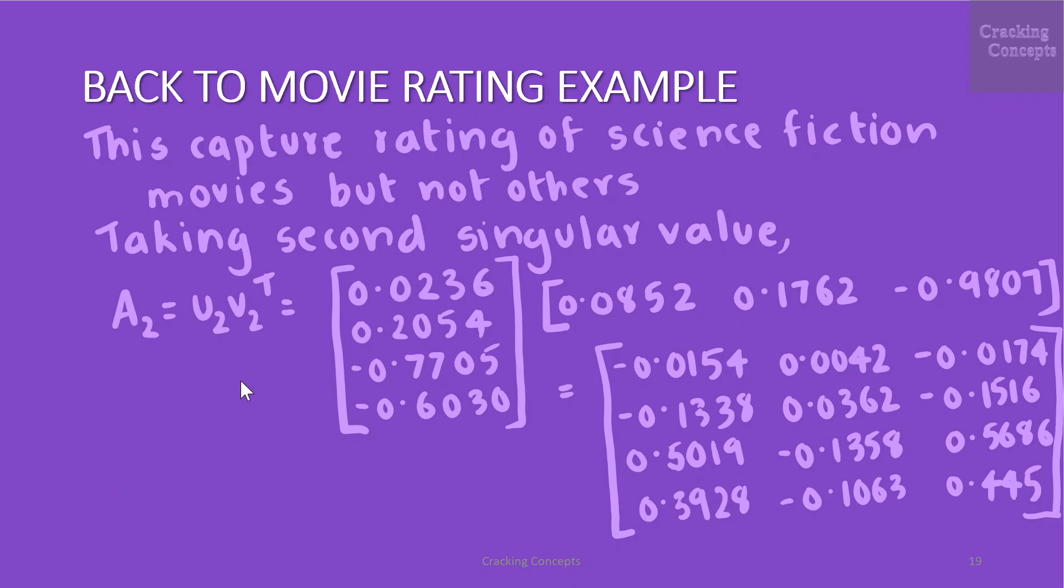So A_2 is given by u_2 v_2^T. This is u_2. This is the second singular value. We get this resultant matrix. In the second rank 1 approximation A_2, we capture Chandra's ratings and movie types well but not the science fiction lovers.